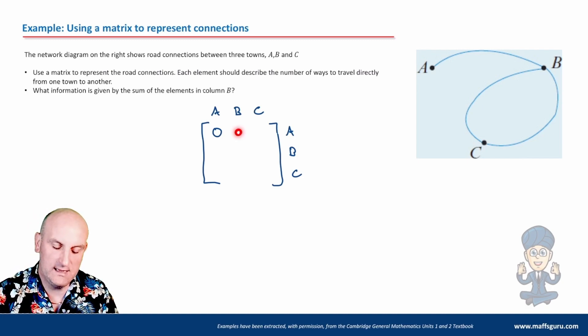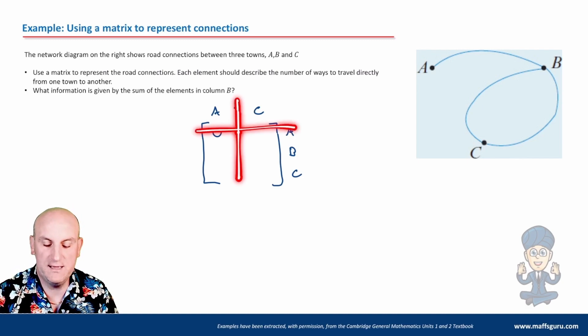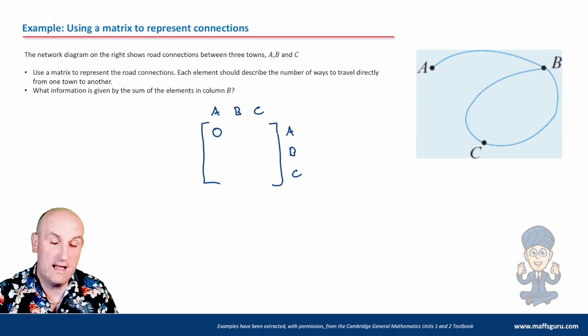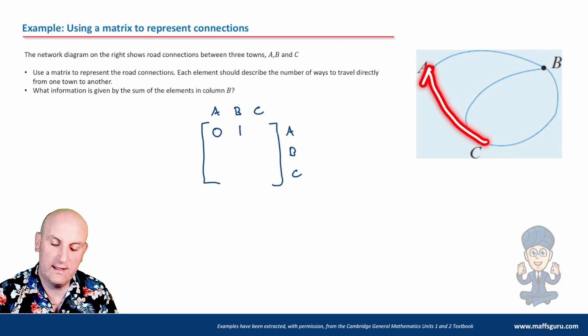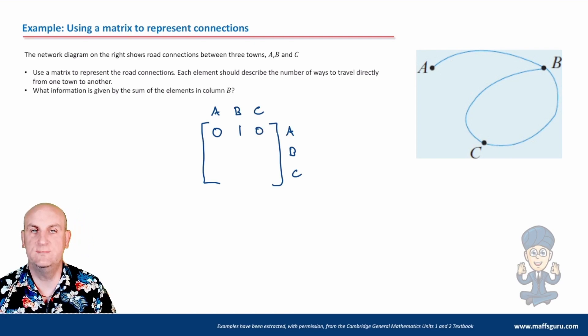The next point here is, is there a connection between B and A? And if there are, how many ways are there of me getting from B to A? Well, if we look at my diagram, from B to A there's only one road, so I would put a one in there. What about C to A? Can I go directly from C to A without passing through anyone else? Nope. So there we go. That's going to be a zero.